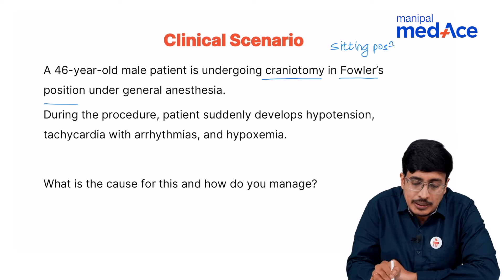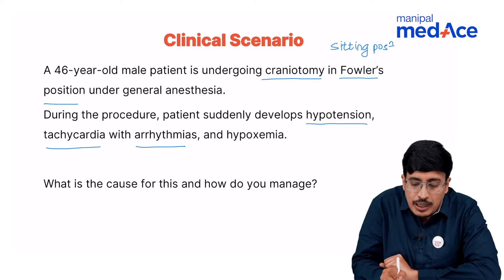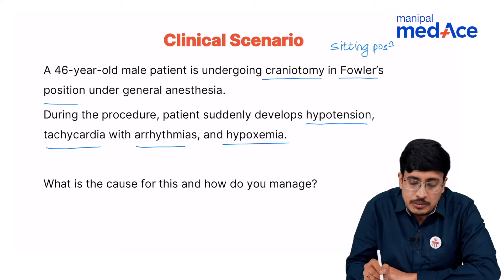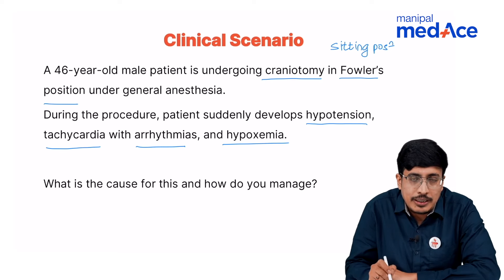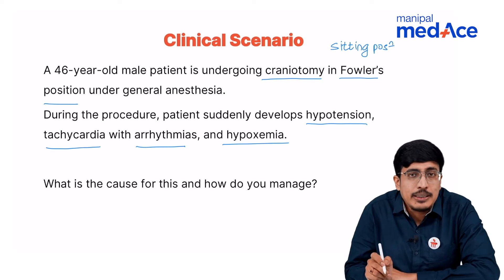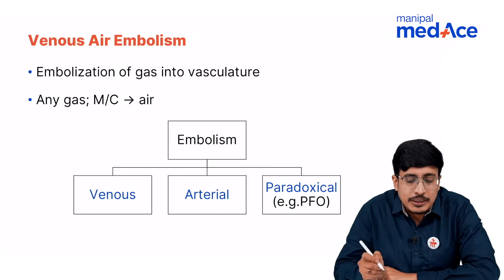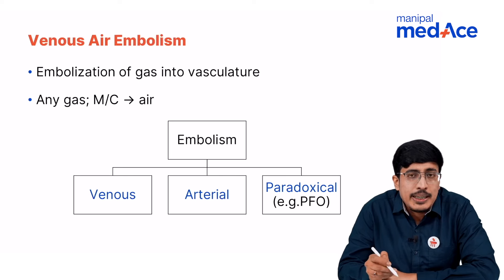The patient is under general anesthesia, so he is not conscious, and during the procedure he suddenly develops hypotension. There is tachycardia with sudden onset arrhythmias and hypoxemia. Something has entered his cardiopulmonary system causing all these events. This is a typical case of venous air embolism — embolization of gas into the vasculature. Any gas can enter the veins, most commonly air.